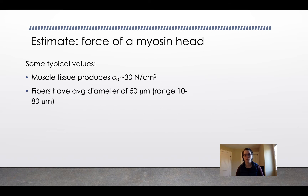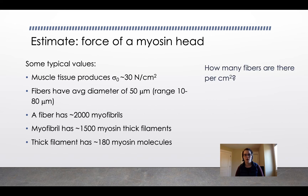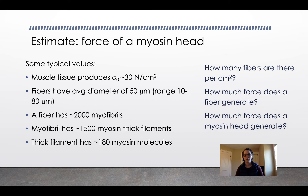Fibers have an average diameter of 50 microns, ranging from 10 to 80 microns. A fiber has 2,000 myofibrils, and a myofibril has about 1,500 myosin thick filaments. Each thick filament has about 180 myosin molecules. We'll do this exercise in class to estimate the force of a myosin head. Consider: how many fibers are there per square centimeter, how much force does a fiber generate, and finally, how much force does a myosin head generate? Using unit conversion techniques, you can estimate the force generated by a myosin head.